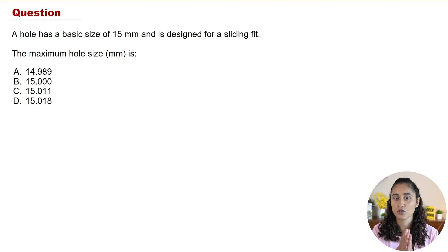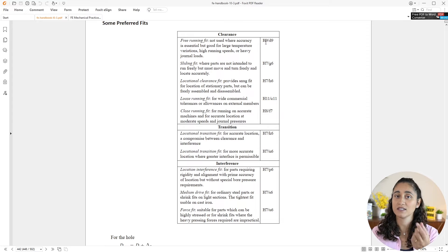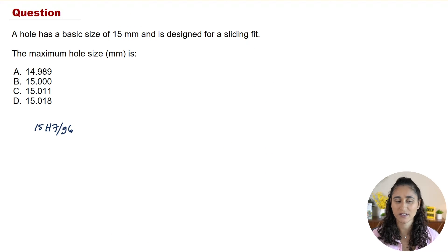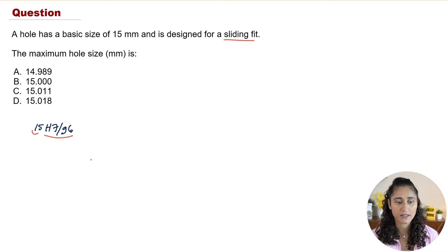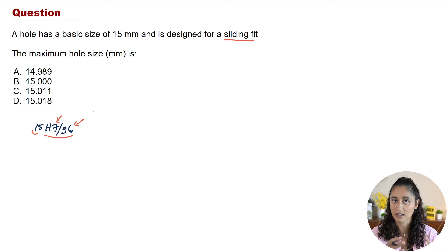The first thing we do is go to the reference handbook and look at the fits table. For every fit there is a symbol — in this problem we have a sliding fit, so the symbol is H7/G6. We write the basic size followed by this symbol. Note that uppercase letters refer to the hole and lowercase to the shaft. So 7 is the IT grade for the hole and 6 is the IT grade for the shaft.